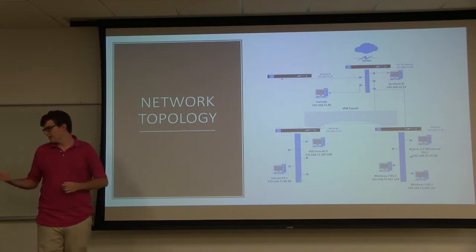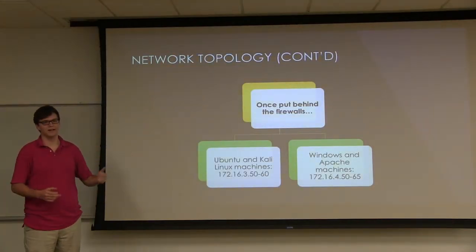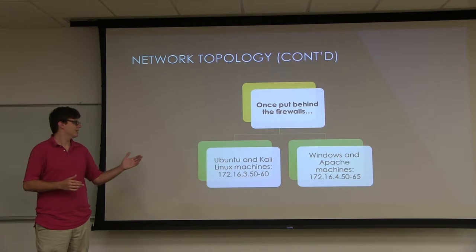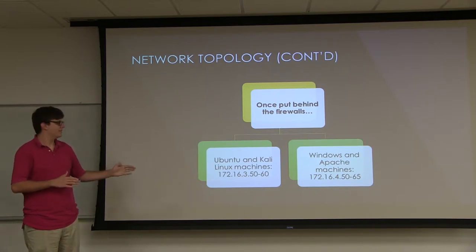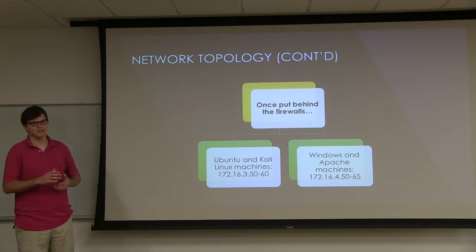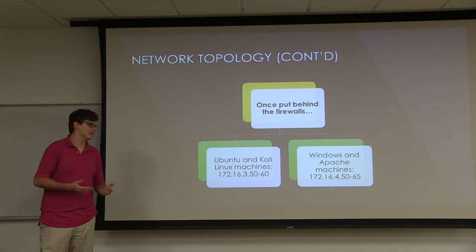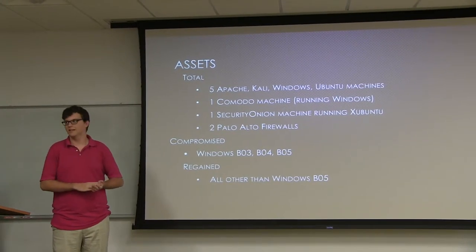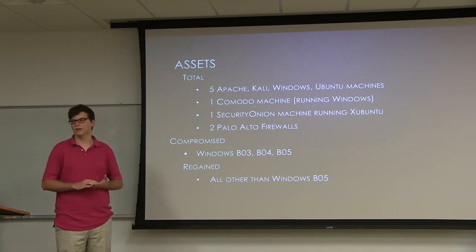Once we put machines behind the firewall, it acted as a DHCP server and assigned addresses in the 1.6.3.50-60 and 1.4.50-65 ranges to accommodate all machines, with a lease set to about two days. Our assets were five Apache, Kali Linux, Windows, and Ubuntu machines, one Komodo, one Security Onion, and two Palo Alto firewalls.